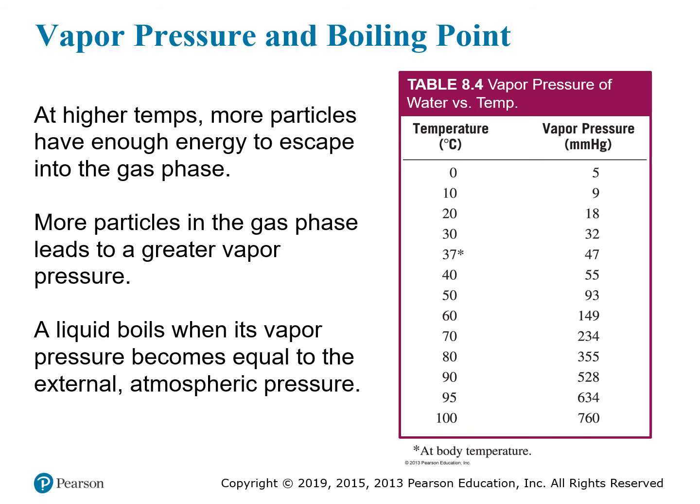A liquid boils when its vapor pressure becomes equal to the external atmospheric pressure. Think of atmospheric pressure as pushing down on the liquid, keeping molecules in the liquid phase. At 0 degrees Celsius, liquid water has a vapor pressure of only 5 millimeters of mercury — very few water molecules escape. As temperature increases, vapor pressure increases: at 50°C it's 93 mmHg.